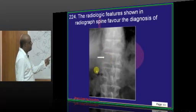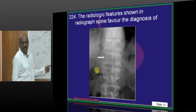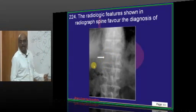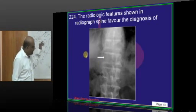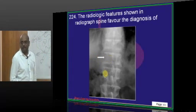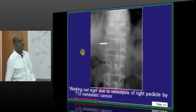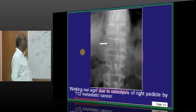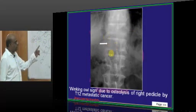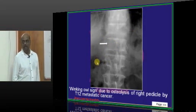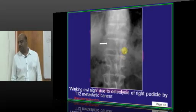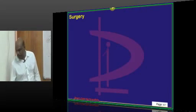Now this is called winking owl sign, where the pedicle of the vertebrae is destroyed. That typically happens whenever metastasis happens to the spine. This is called bony metastasis, and the winking owl sign due to the osteolysis of the pedicle because of metastatic cancer is what you need to remember.